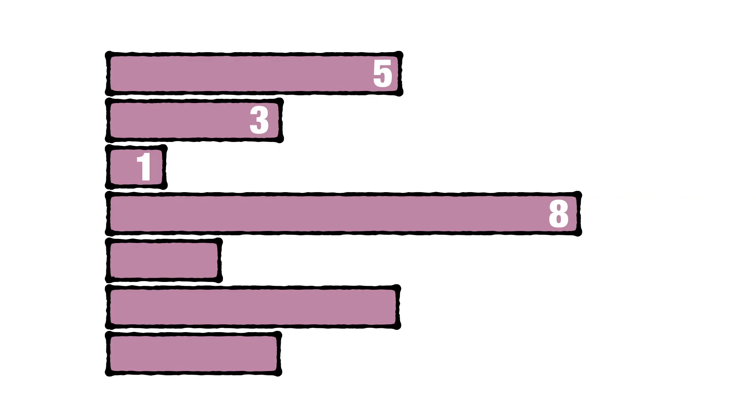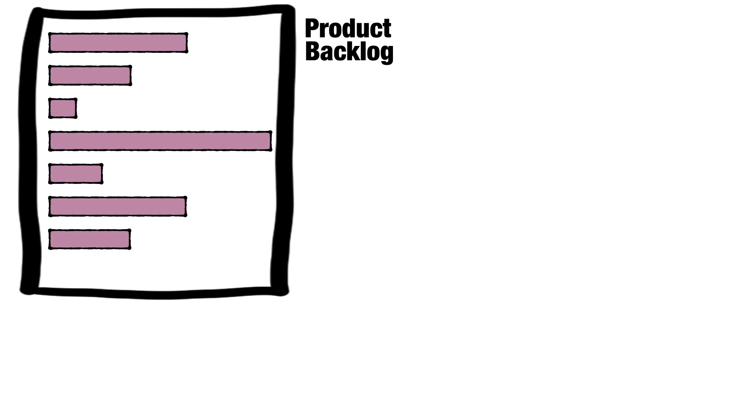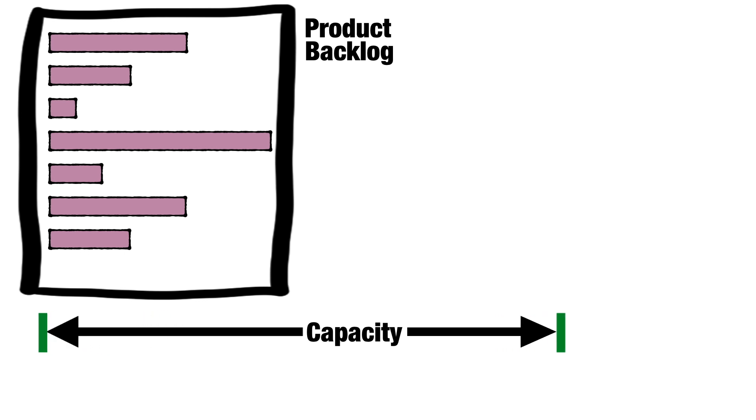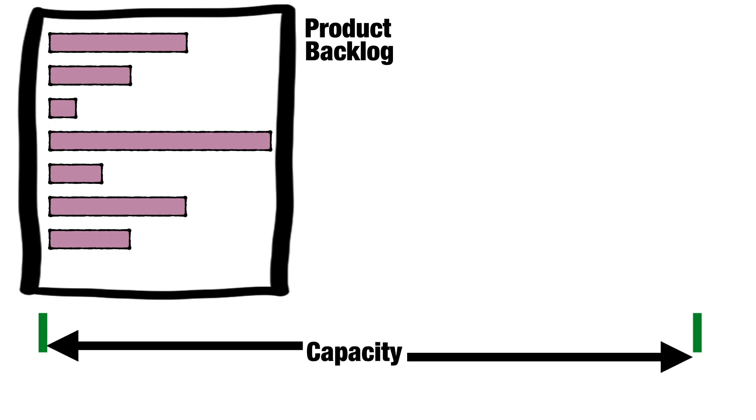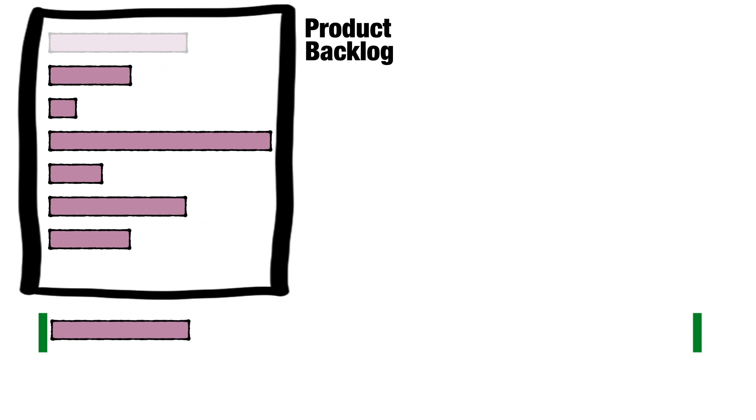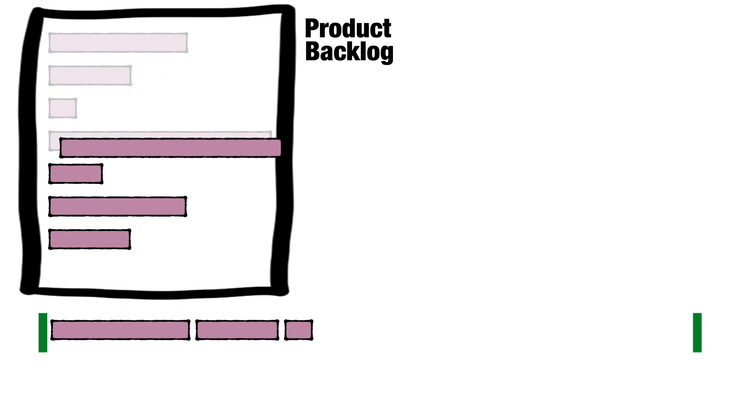I'm going to represent the relative size visually. It's common practice to size using story points, although you won't find a mention of story points in the Scrum Guide. And if the team has a few sprints under its belt, it will have an idea of its capacity — in other words, the number of story points it can process during one sprint. So you have a prioritized list of sized things to do, and a capacity.